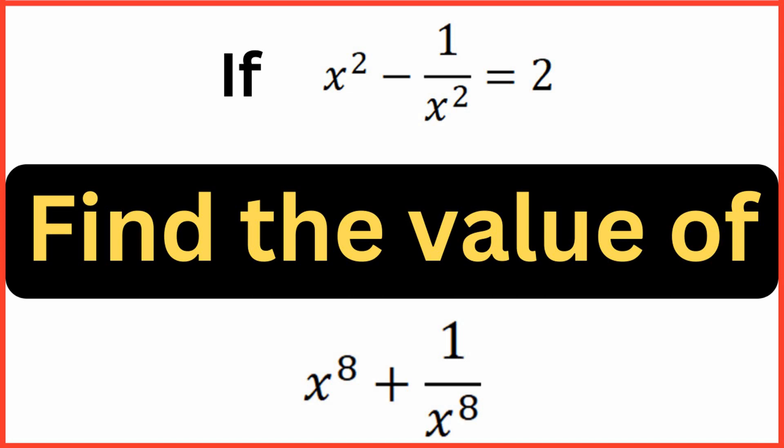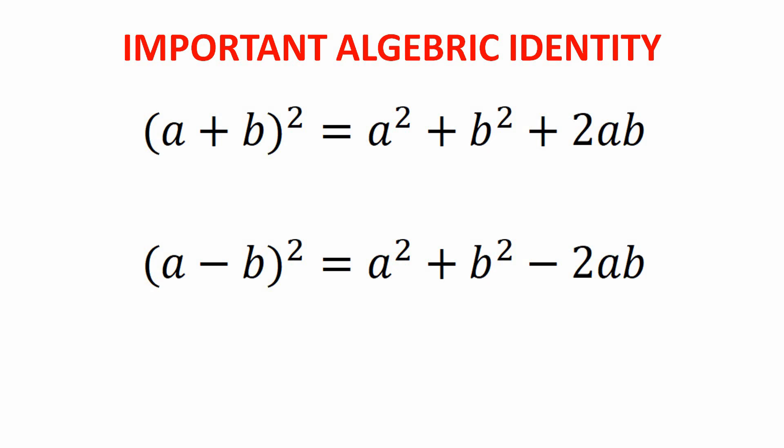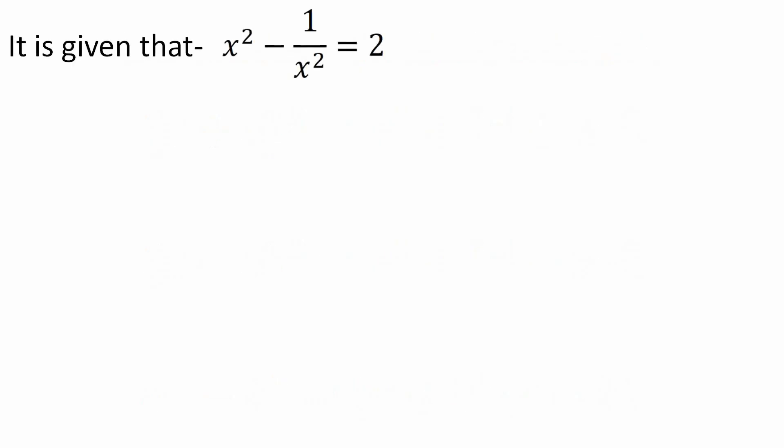You can pause the video and try to solve this question on your own. Before moving ahead, we have to understand some important algebraic identities: (a+b)² = a² + b² + 2ab, (a-b)² = a² + b² - 2ab, and a² - b² = (a+b)(a-b). Note that the third identity, a² - b², is not going to be used here — some students may approach it that way, but that's not the smart move for this question.